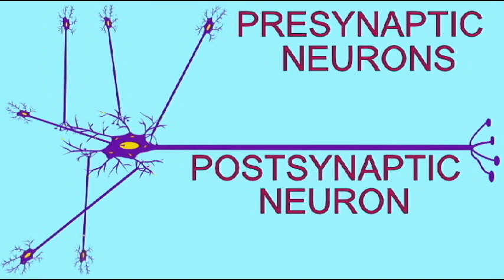The neuron depicted in the center, the post-synaptic neuron, must perform spatial summation. It must add together the cumulative effects of all of these pre-synaptic neurons.